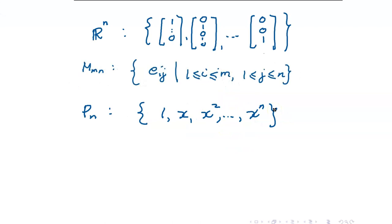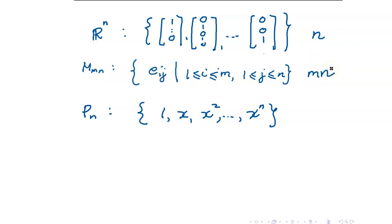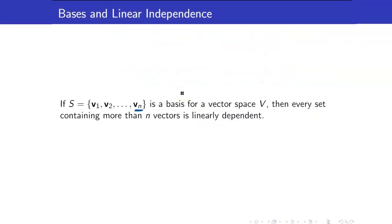Let me write here the standard bases for the three common vector spaces used in this course: for Rn, for Mmn, and for Pn. For Rn, we found n basis elements. For the set of matrices of size M by N, we have M times N elements. For Pn, we have N plus 1 basis elements. Now, why are we concerned with the cardinalities of these sets? The reason is given by this theorem.